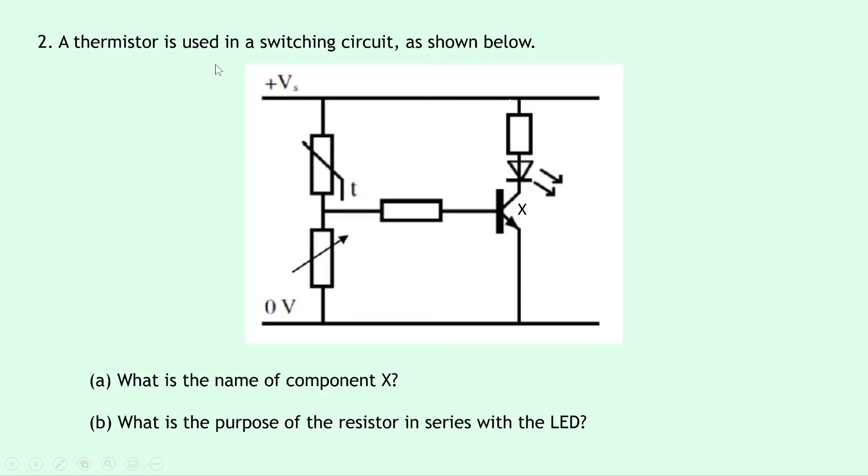Question two says a thermistor is used in a switching circuit as shown below. So you'll notice we don't know what the supply voltage VS is, it just says VS. We've also got the thermistor as the upper component this time and the variable resistor as the lower component. It then says part A, what is the name of component X? Well, this has an arrow that is not pointing in towards the transistor, so this must be an NPN transistor.